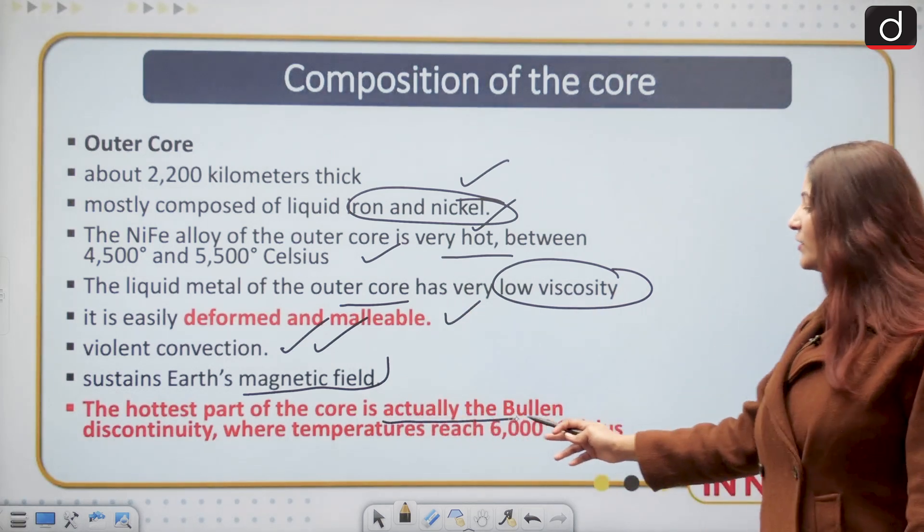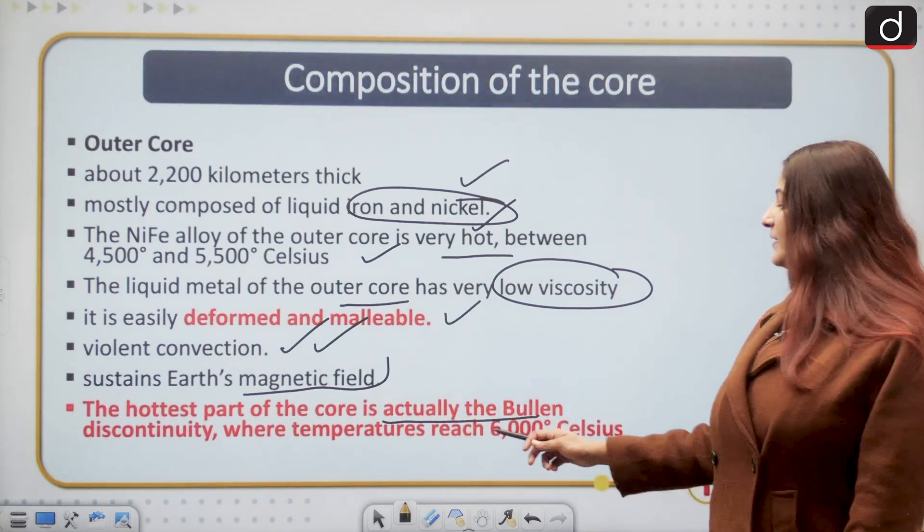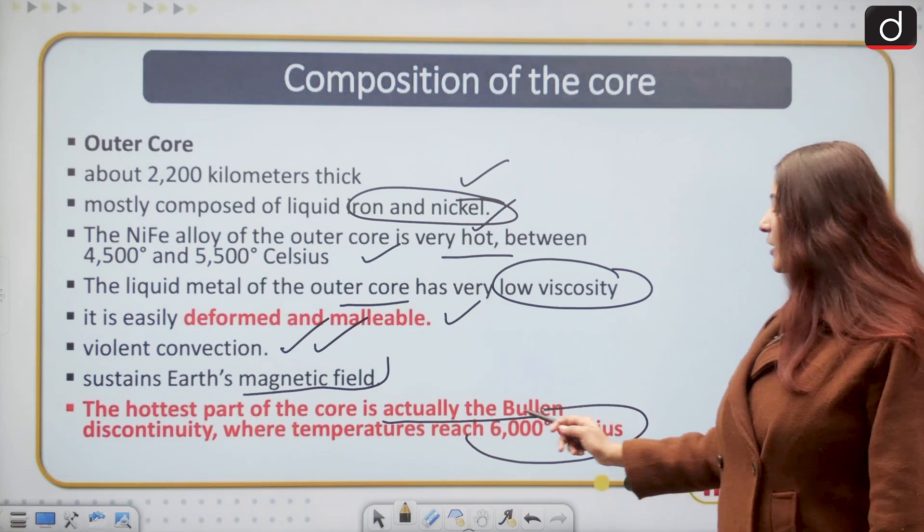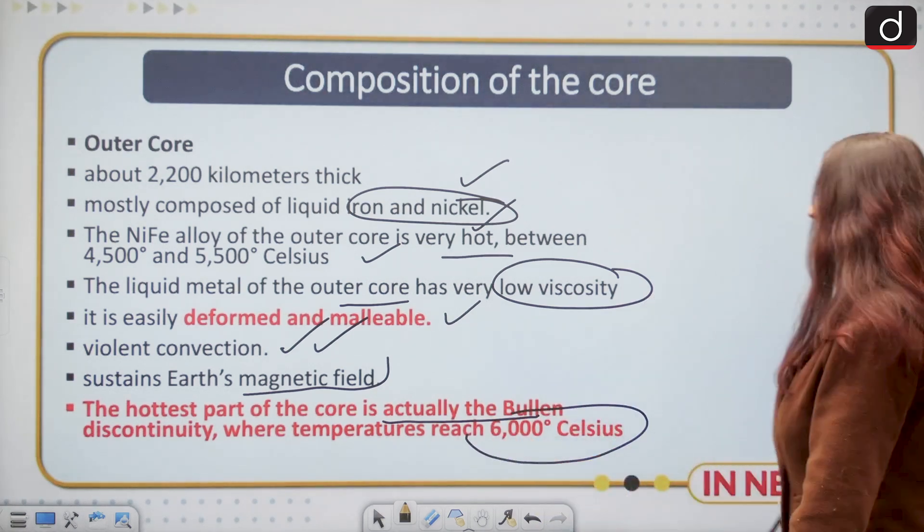The hottest part of the core is actually the Bullen discontinuity, where the temperature is 6000 degrees Celsius, almost like the temperature of the sun.